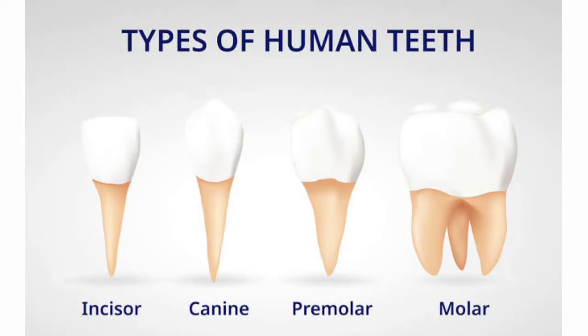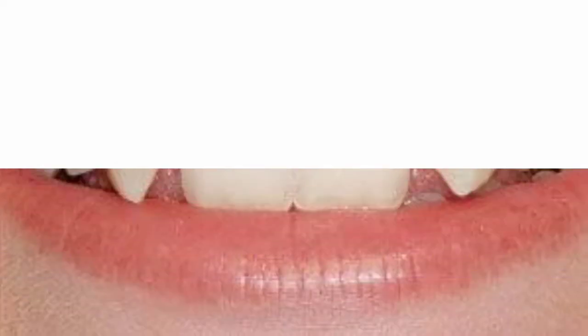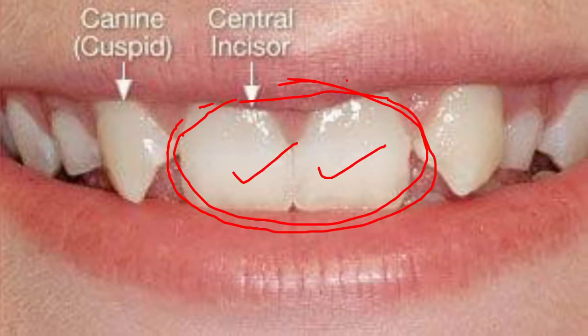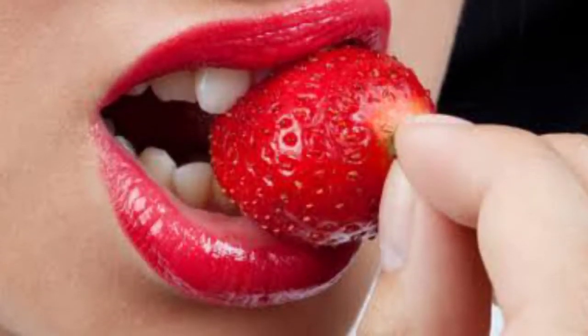The four types are incisors, canines, premolars, and molars. Incisors are the teeth found in the front of the mouth, mainly used for biting and cutting food. Whenever you take a bite of any food, you are using the incisor teeth.